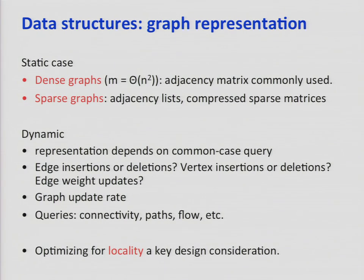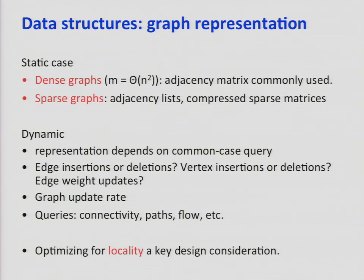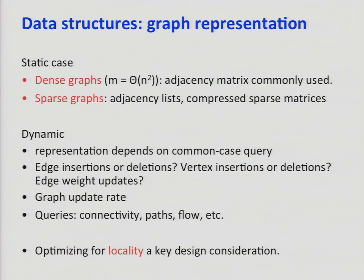Let's look at data structures. For a dense graph, keeping a two-dimensional array matrix is just fine. For a sparse graph, you want something space-efficient — on the order of the number of edges, not the square of vertices — so you use adjacency lists. If the graph is dynamic, you ask: is it how dynamic it is? Are updates coming in batches or one by one? If they come in batches, you can create a time window and do a batch update for high performance.